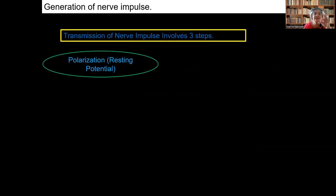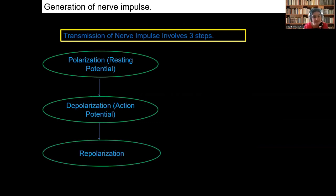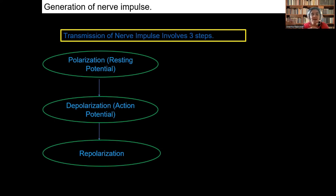The transmission of the nerve impulse mainly involves three steps. First step: the neuron will be in the rest phase — what we call as the polarization state. Then when the stimulus is seen and the impulse is generated, the nerve cells get excited — this is the depolarization phase, due to the action potential. After that, when the nerve impulse is traveling from one part of the neuron to another, repolarization of the neuron also occurs. Now we will be discussing each phase in detail.